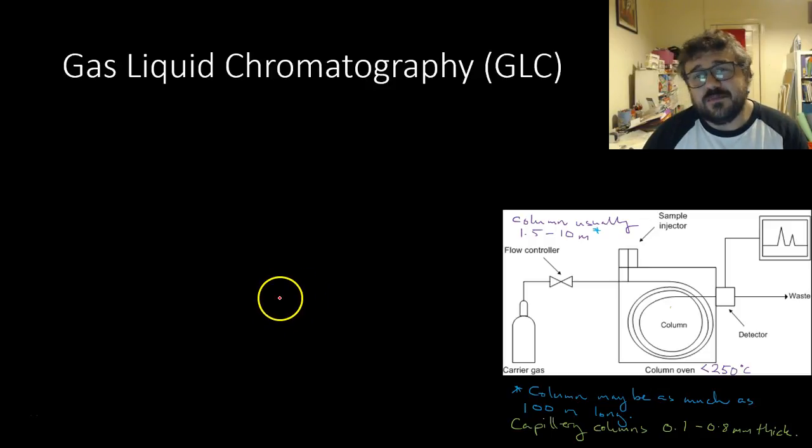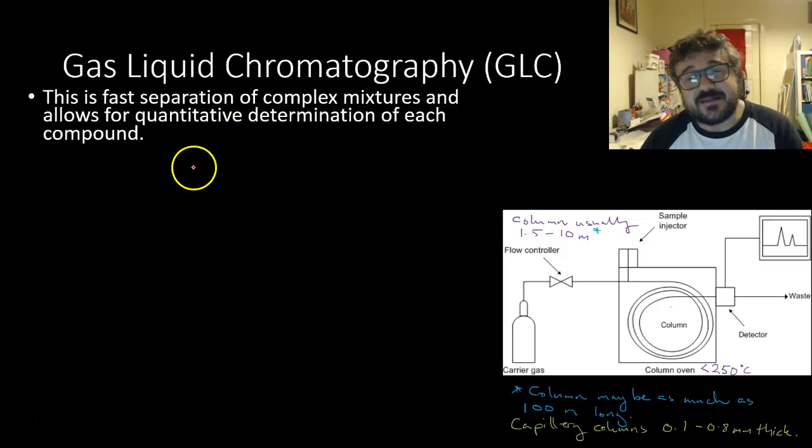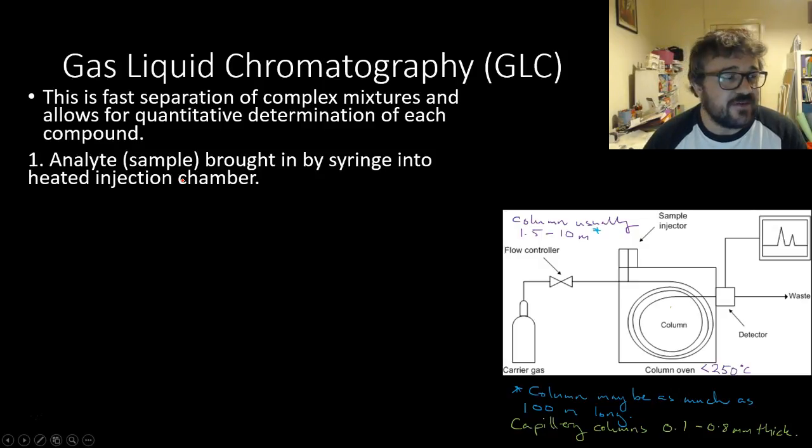What is GLC in particular? This is what our machine looks like. So, basically, it's a fast separation of complex mixtures and allows for a quantitative determination of each compound, and that's pretty cool. This is something which, when we use paper chromatography, we don't get quantitative results out of it.